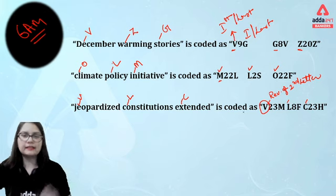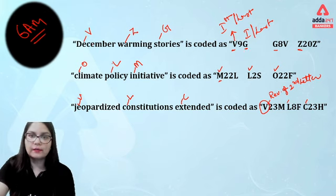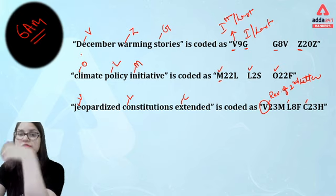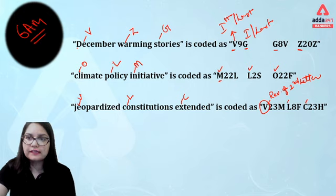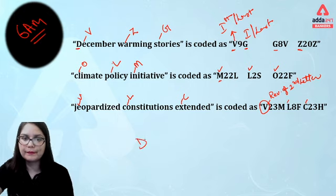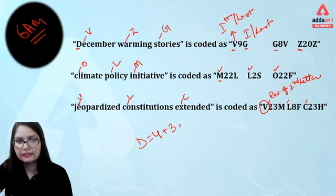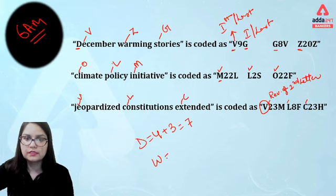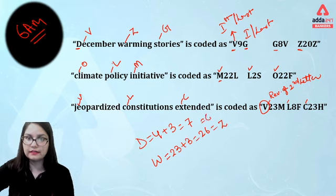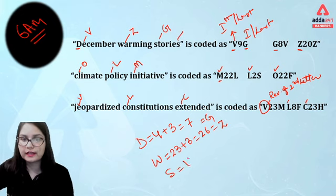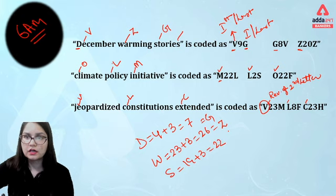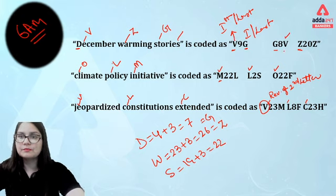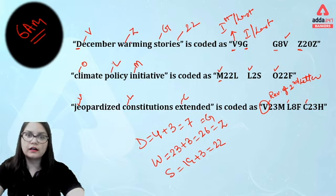Now secondly, let's observe the relationship with the third element. D has a place value of 4 and we are having G, which is 7. If we add 3, that gives 7. So the third element equals the place value of the first letter plus 3. W has place value 23; 23 plus 3 is 26, that means Z. S has place value 19; 19 plus 3 is 22 — and yes, we are having 22, which is V.